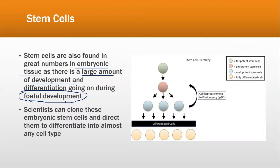Because the developing baby needs muscles, cardiac cells, muscle cells, red blood cells, brain cells, and nerve cells. The stem cells help by dividing and differentiating into many different totipotent, pluripotent, multipotent, and fully differentiated cells. This is why embryonic tissue has such a high concentration of stem cells during fetal development.